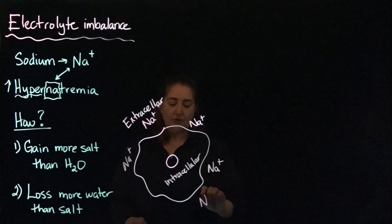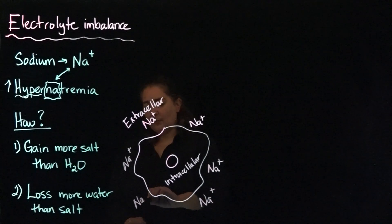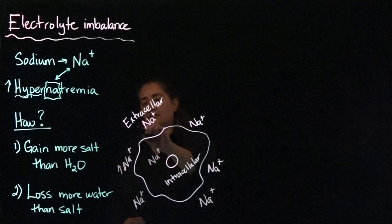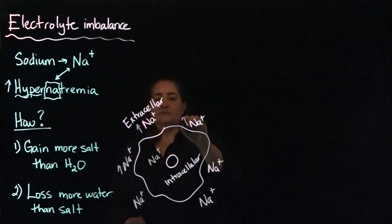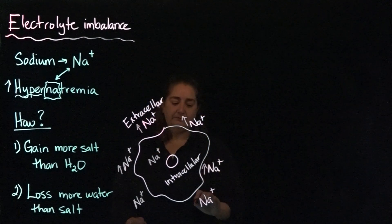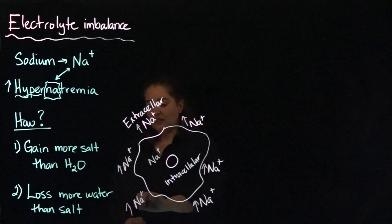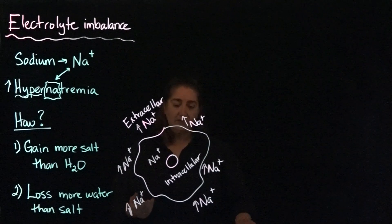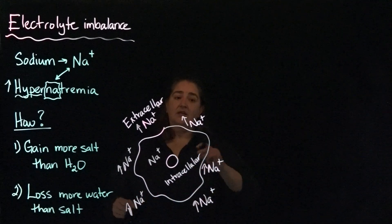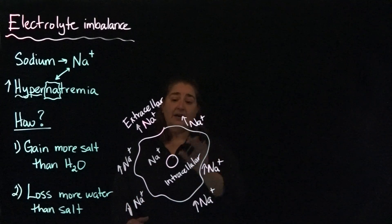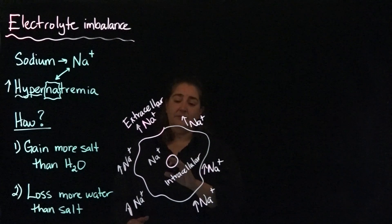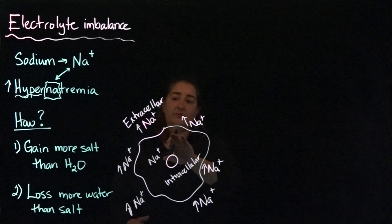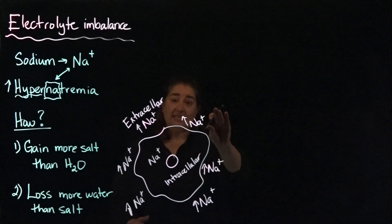With hypernatremia, we've got way more sodium outside of the cell than we do inside. And I'm using the arrows here because there's normally going to be sodium outside of the cells - this is part of the normal process. Normally sodium is a little higher, that helps retain the electrical current across the membrane. What we're talking about here is excess.